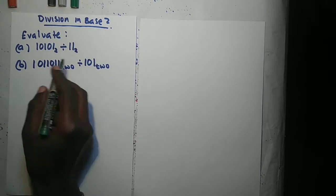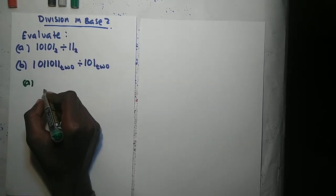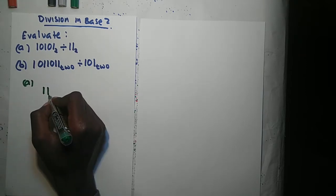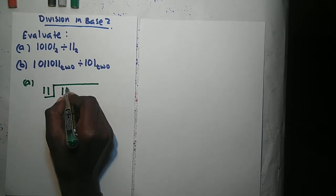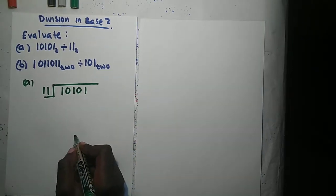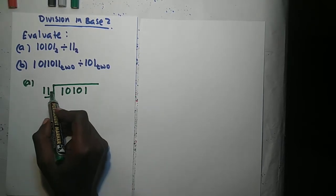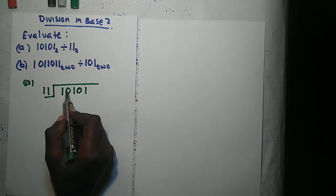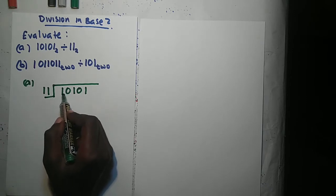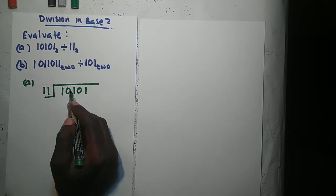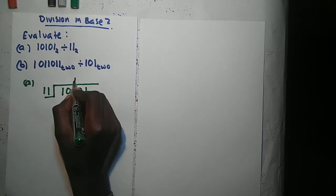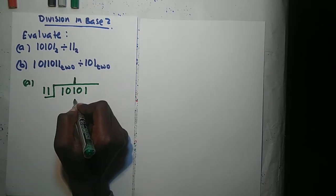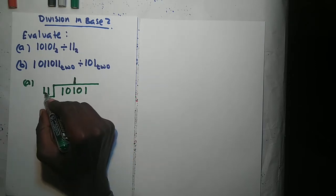So now let's start with our first question. It says evaluate. We use long division to divide here. So we have our long division symbol and we are going to divide 10101 by 11. So 11 into 1 — it can't. We bring down the next digit. 11 into 10 — it can't, 11 is bigger than 10. We go to the third number: 11 into 101 — it can go in, so we write a 1 here because in base 2 if a number can go into another it goes in once.